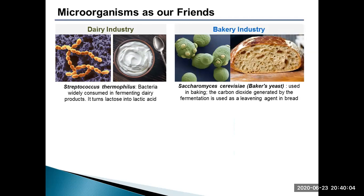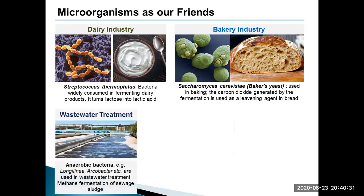Next, we move on to the bakery industry, which is one of the largest segments of food processing in India. For baking bread and bakery products, in particular for raising bread, yeast is used, which ferments the sugar and develops the dough. Three types of bacteria are used to treat wastewater entering the treatment plant: aerobic, anaerobic and facultative. Arcobacter are examples of anaerobic bacteria used in wastewater treatment for methane fermentation of seaweed sludge.